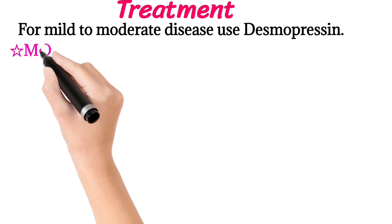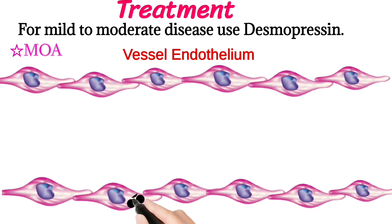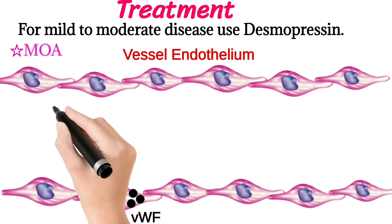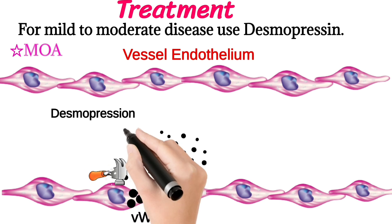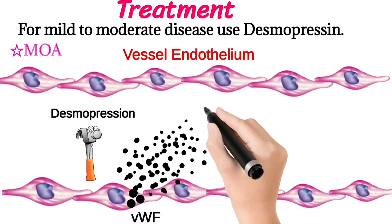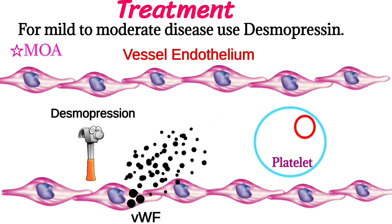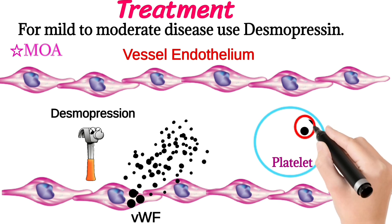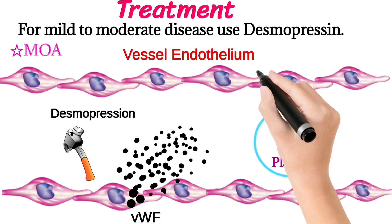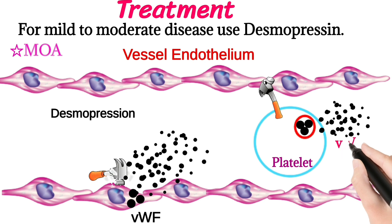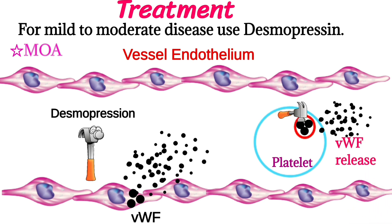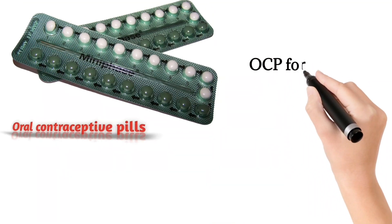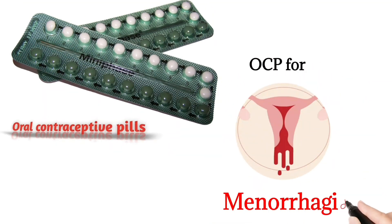The mechanism of action of desmopressin: it acts on vascular endothelial cells to release stored von Willebrand factor, and also releases von Willebrand factor from platelets. Oral contraceptive pills are used for menorrhagia associated with von Willebrand disease.